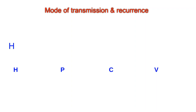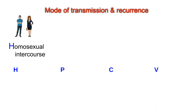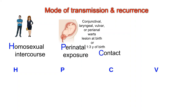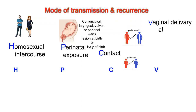Mode of transmission and recurrence of HPV — mnemonic HPCV. H: Human-to-human, homosexual intercourse. P: Perinatal exposure to maternal HPV, causing conjunctival, laryngeal, vulvar, or perianal warts present at birth or developing within 1–3 years of birth. C: Contact from other parts of the body — oral to genital, and hand to genital, or by instruments. V: Vaginal delivery — infection is not linked to maternal genital warts or route of delivery.